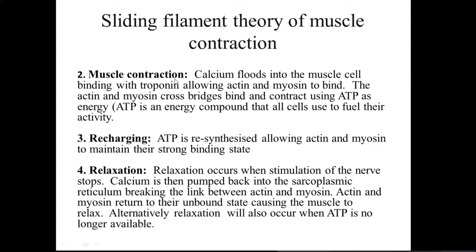The second step is muscle contraction. Calcium floods into the muscle cell, binding with troponin and allowing actin and myosin to bind. There is a complex of troponin and tropomyosin associated with actin, and together they prevent the attachment of actin to myosin. When calcium is not available, troponin remains attached to tropomyosin.